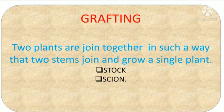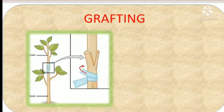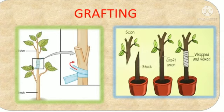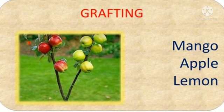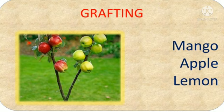In grafting, two plants are joined together in such a way that two stems join and grow as a single plant. Both plants are tied up with a plastic cover. The plant which has roots is called the stock, and the one without roots is called the scion. Grafting is very useful in many plants such as mango, apple, lemon, etc.